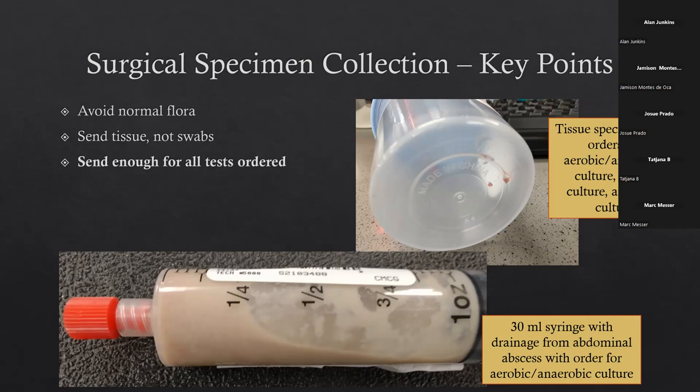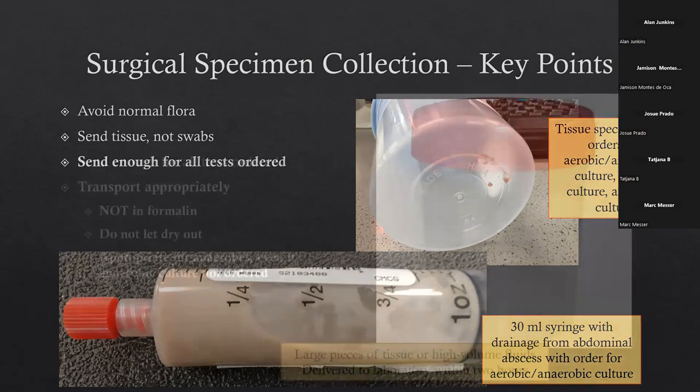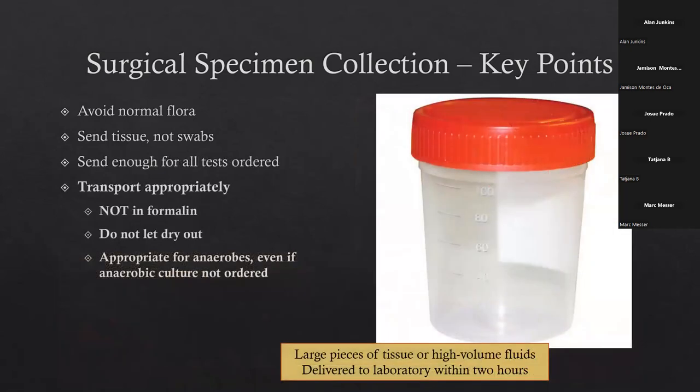What we're going to culture is the part of the tissue that looks infected — inflamed, necrotic tissue. We would like to get that material. If you send us the whole organ, we will search around and try to find the part that looks the grungiest.